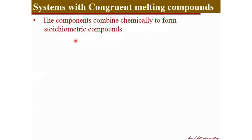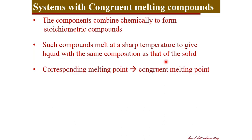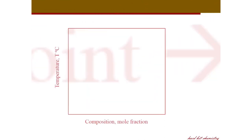We now move on to the congruent melting system. The two components A and B react to form a new compound. When this compound melts, it keeps the same composition as in the solid phase, and the corresponding melting point is called the congruent melting point.